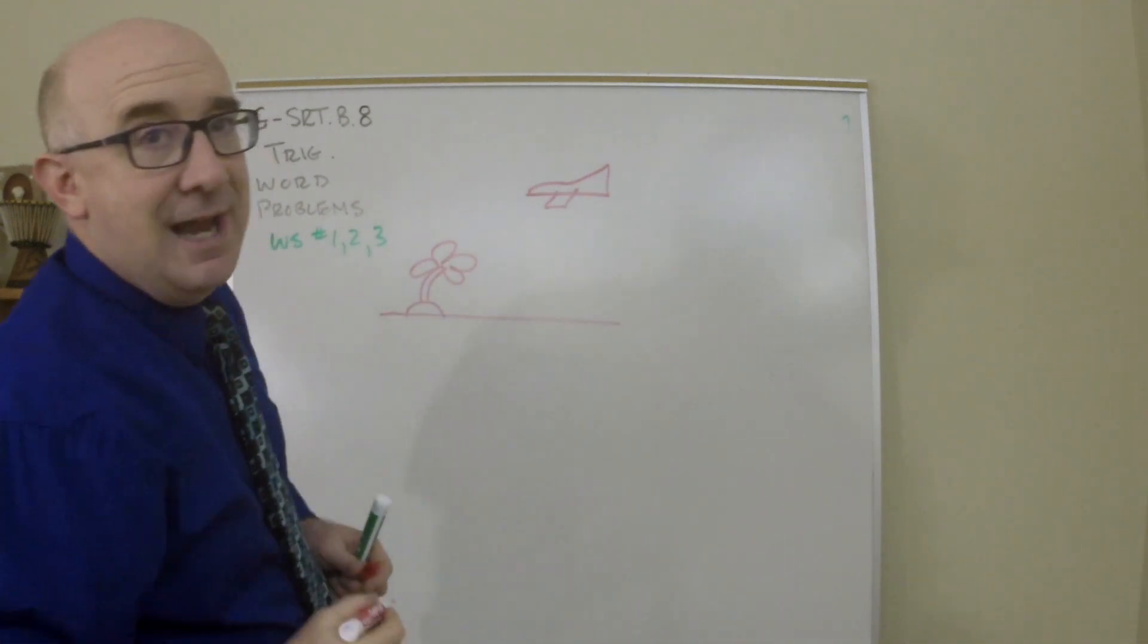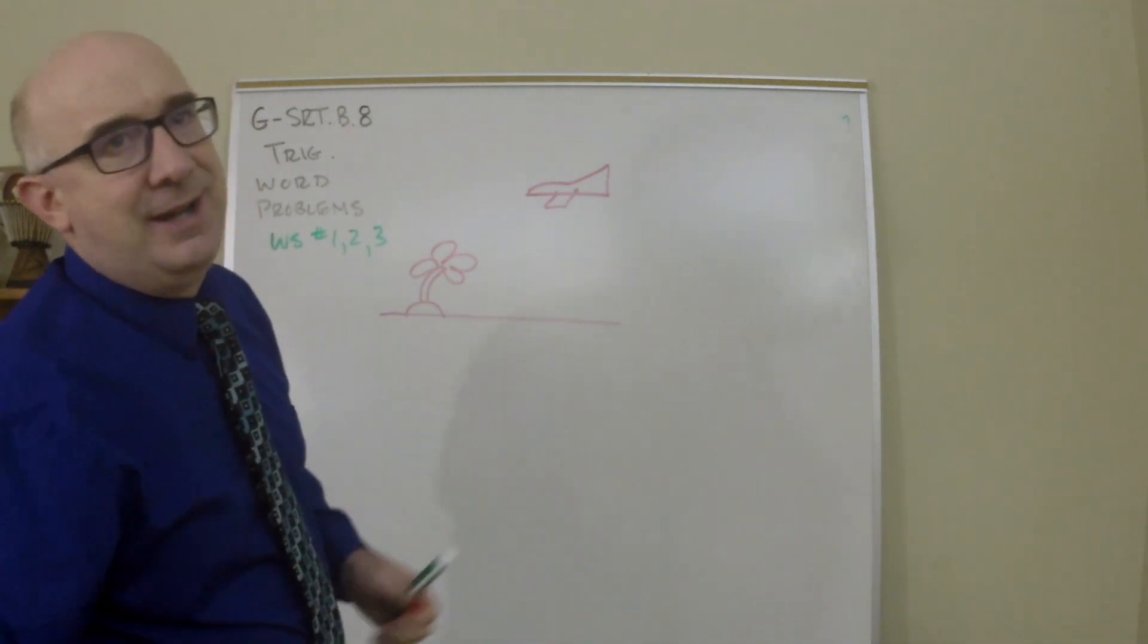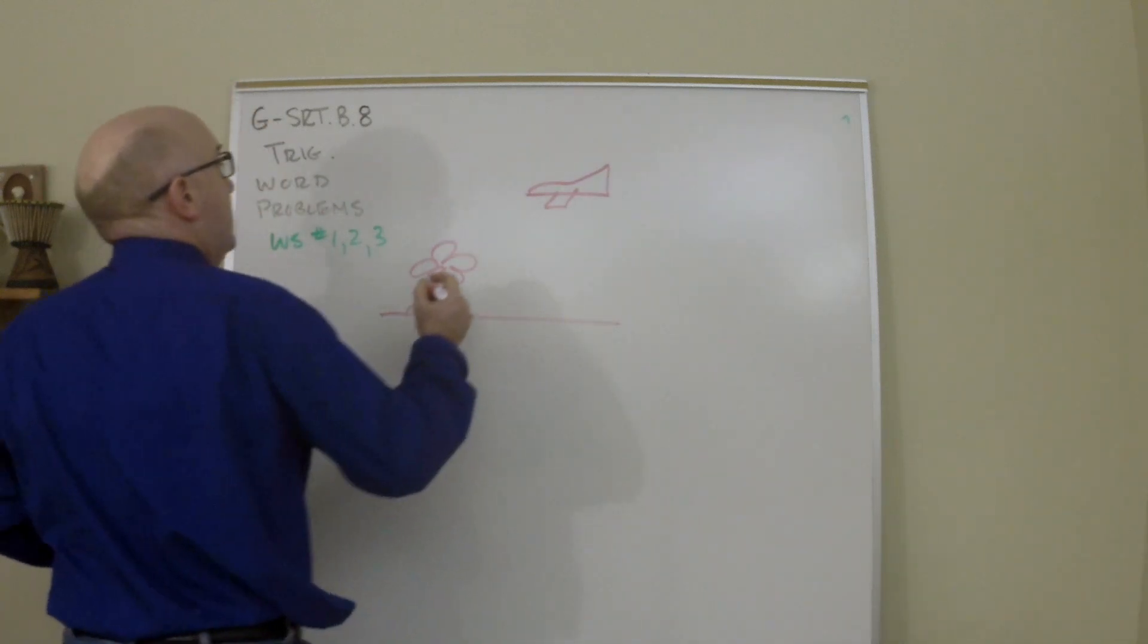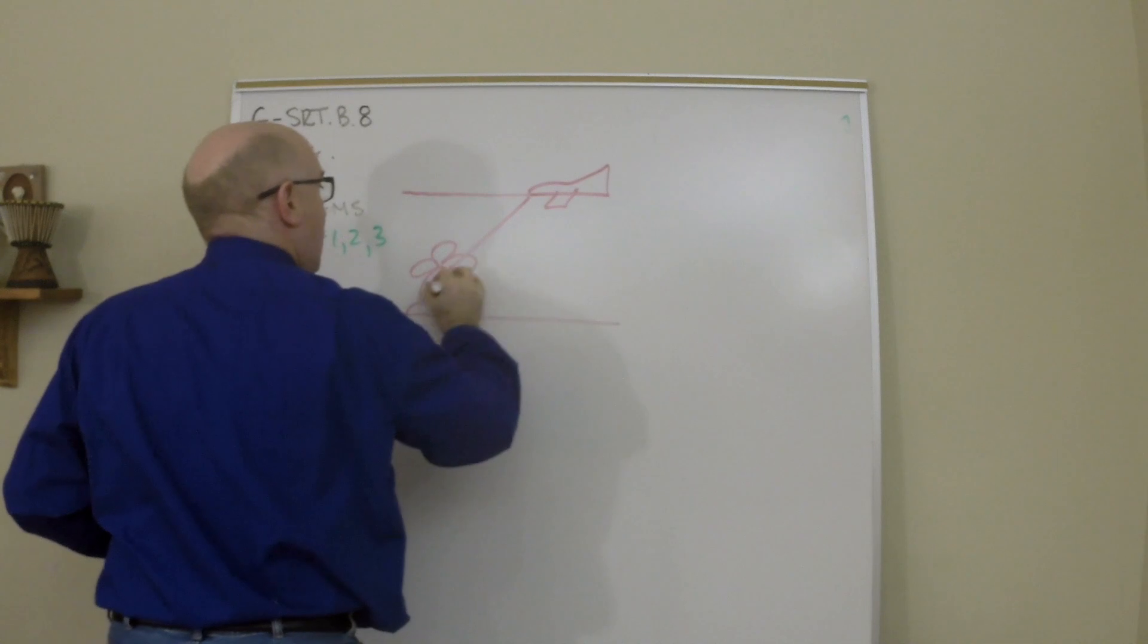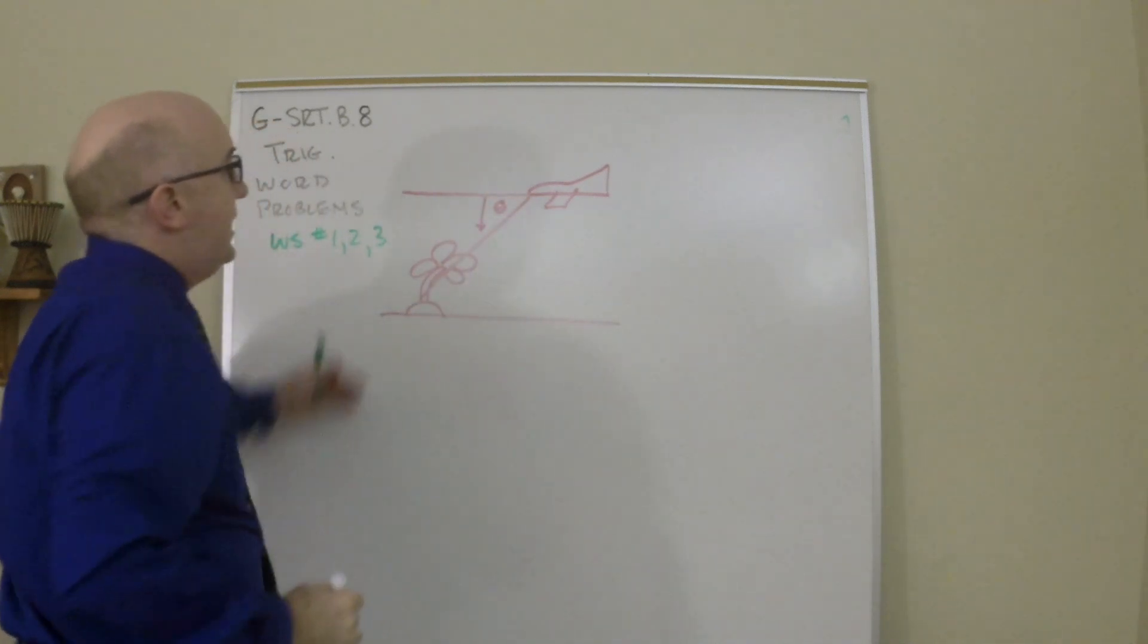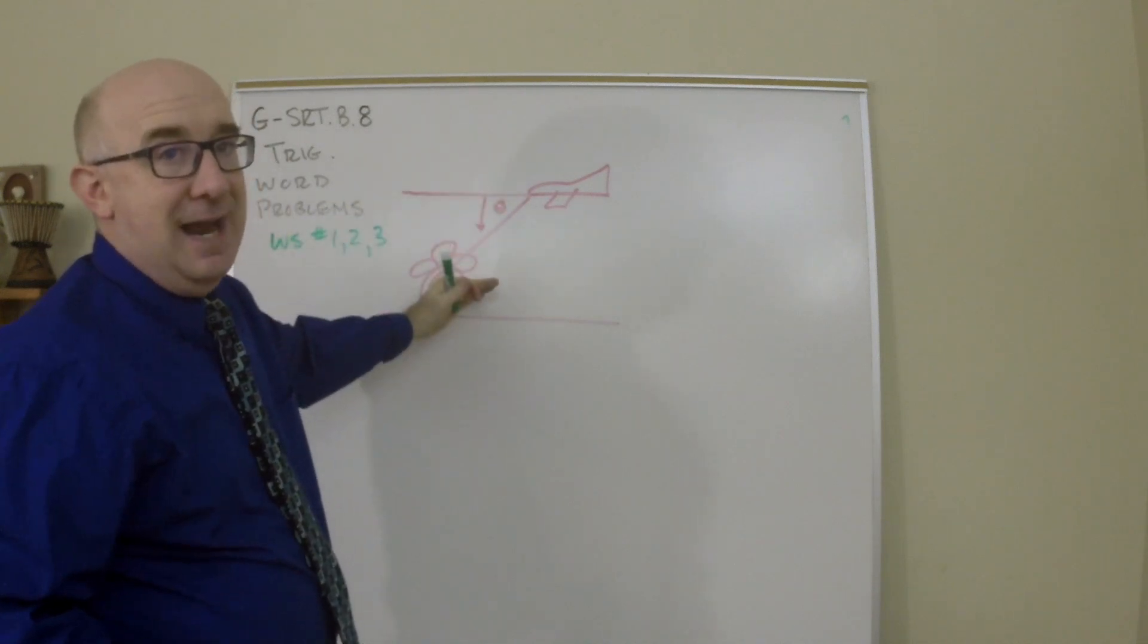And you look down at that palm tree at a certain angle, let's say 40 degrees. The angle of depression is you looking down at that item, which is this angle here. It's from the horizon looking down.